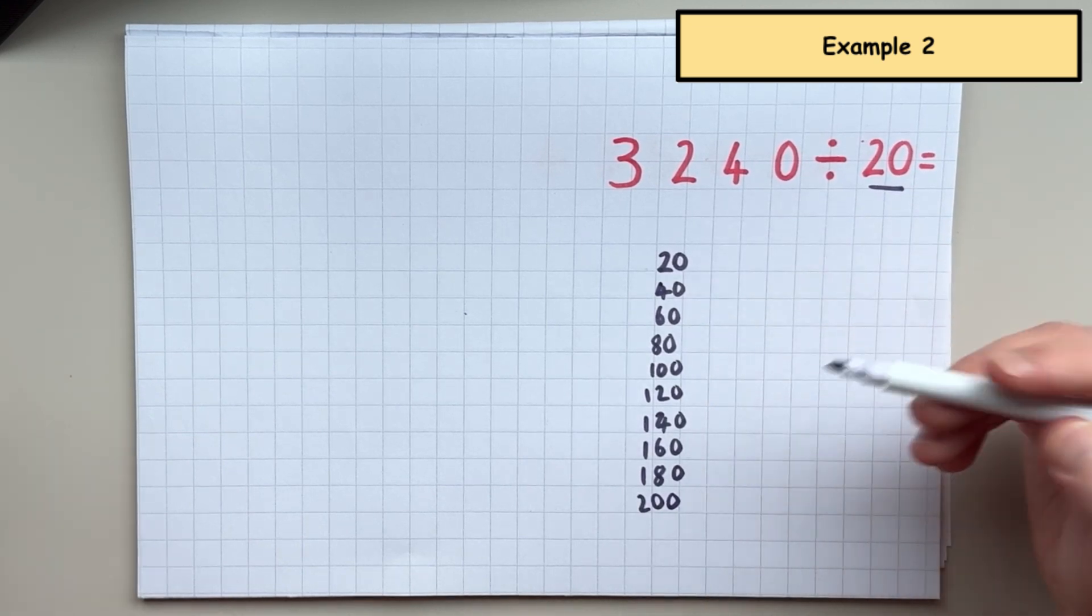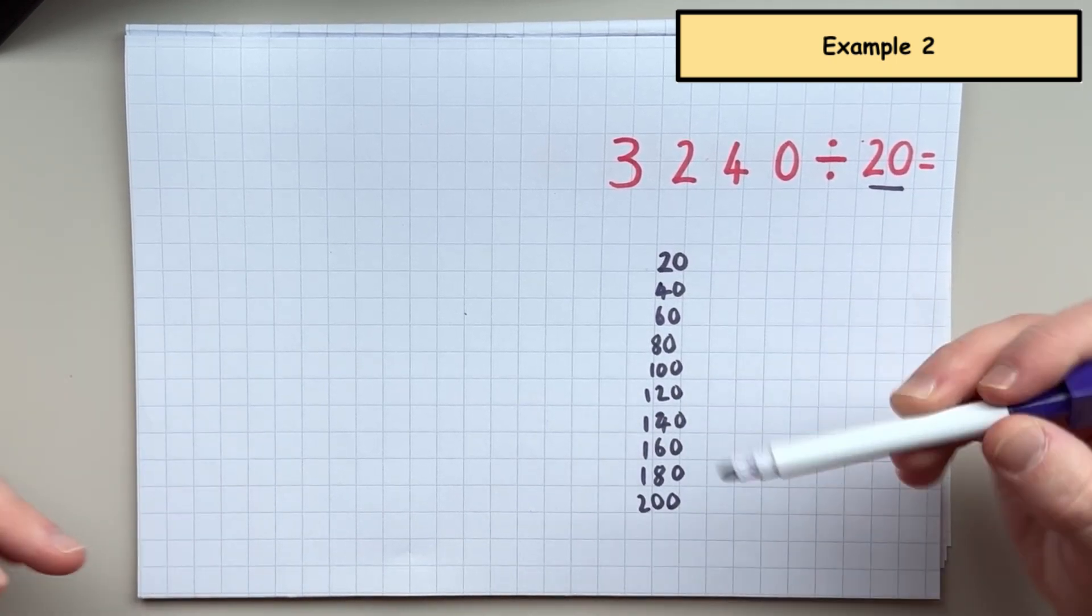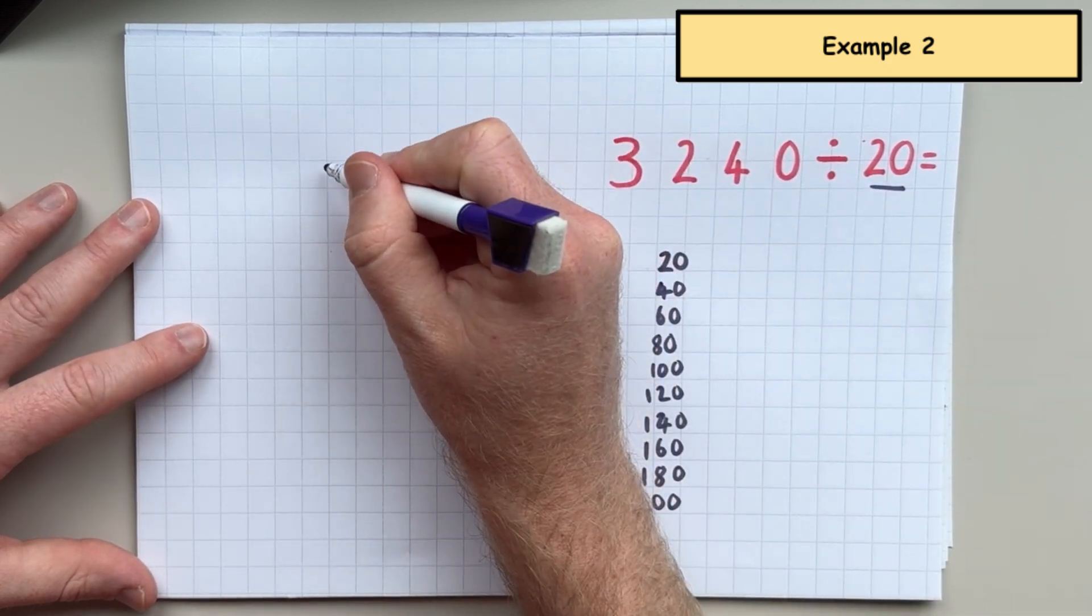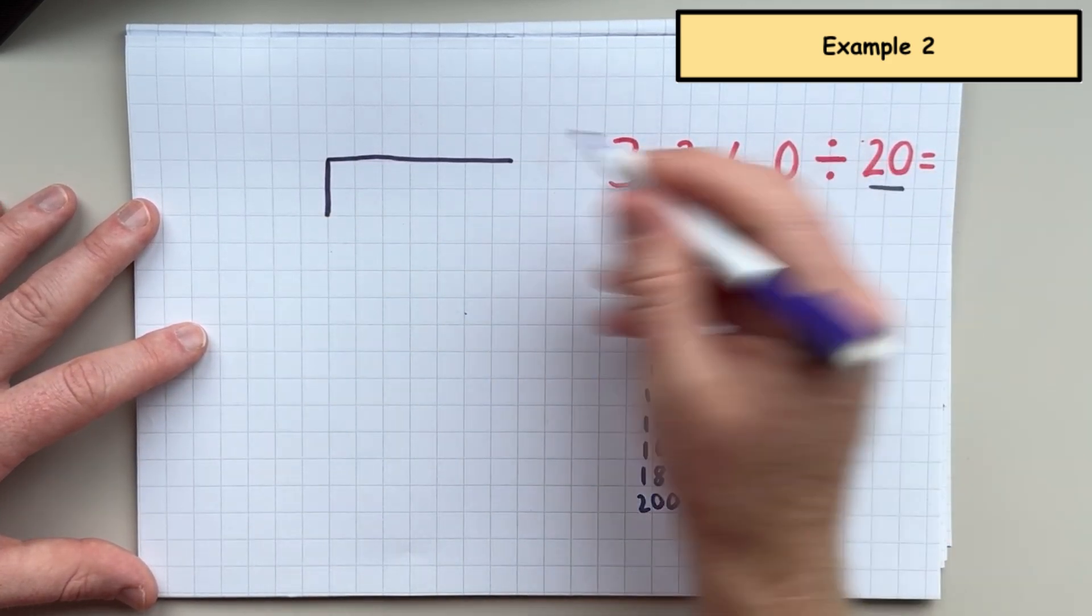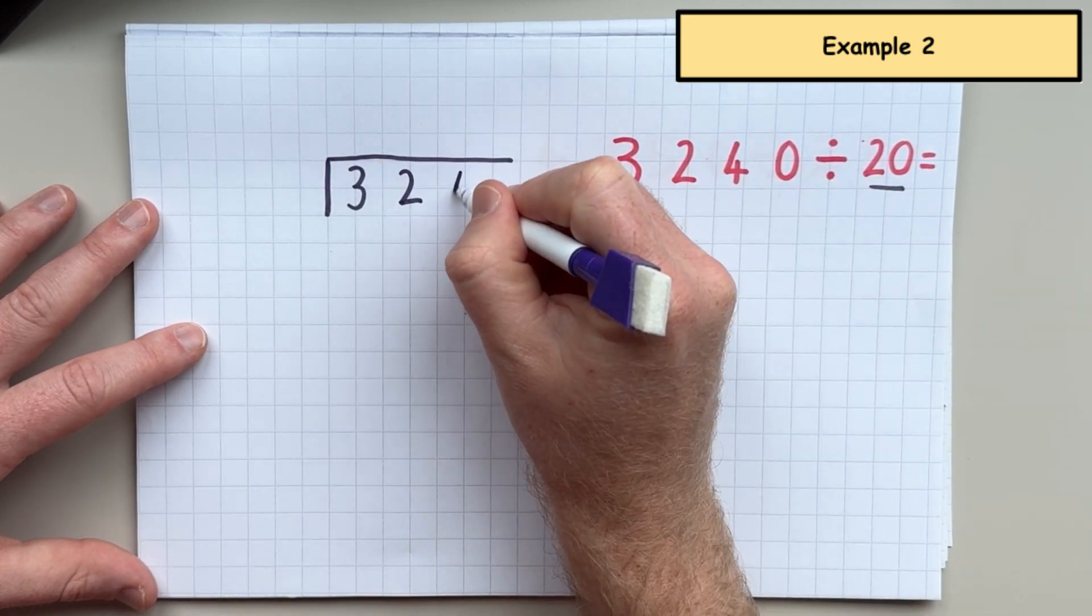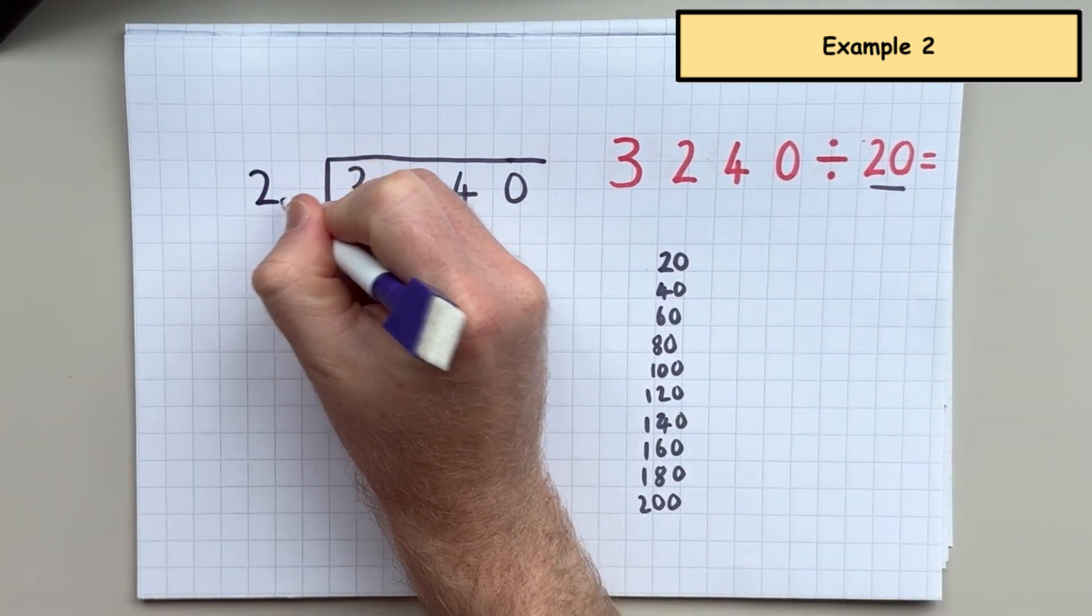Now, the 20 times table is something that I could maybe figure out in my head. But imagine if we were dividing by 13 or by 17, it would be a lot more difficult. That's why writing a list down the side is very, very useful. So I'm going to put the number that we're dividing underneath the bus stop, 3,240. And the number that we are dividing by goes on the outside.